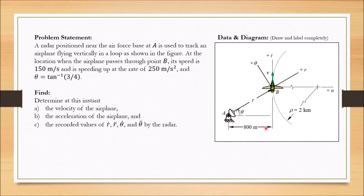Based on this situation, we are asked to determine: A, the velocity of the airplane; B, the acceleration of the airplane; and C, the recorded values of R dot, R double dot, theta dot, and theta double dot by the radar.